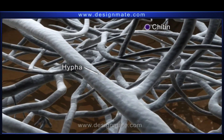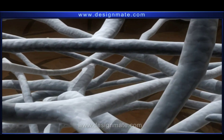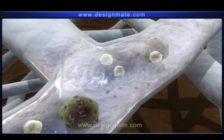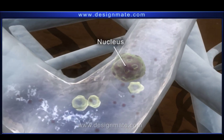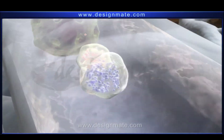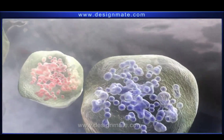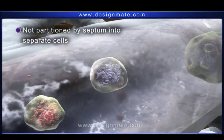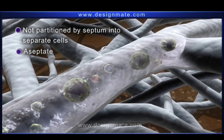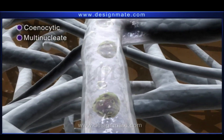The cell wall of a hypha is made up of chitin. The cell wall encloses the cytoplasm, which contains numerous nuclei and vacuoles with stored small molecules like amino acids and polyphosphates. The cytoplasm is not partitioned by a septum into separate cells, so a hypha is aseptate. Therefore, the mycelium is coenocytic — that is, it is multi-nucleate.